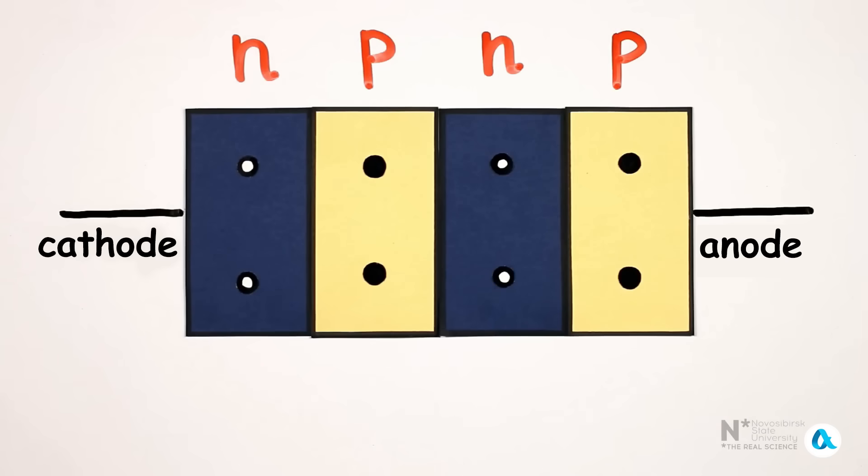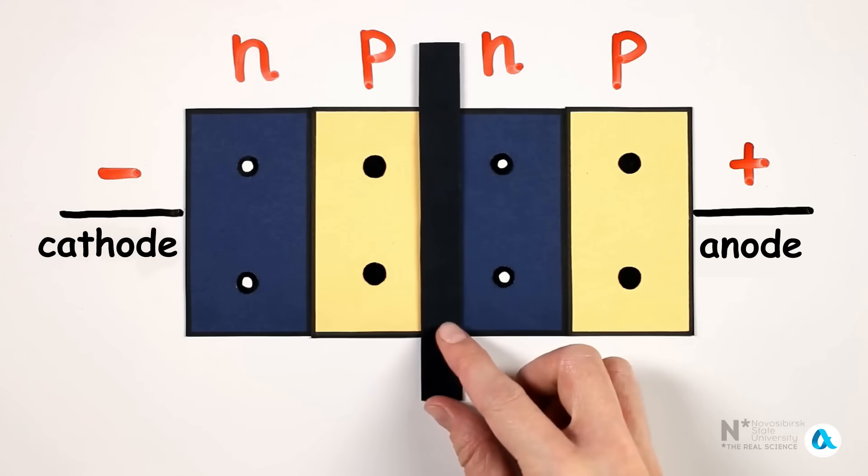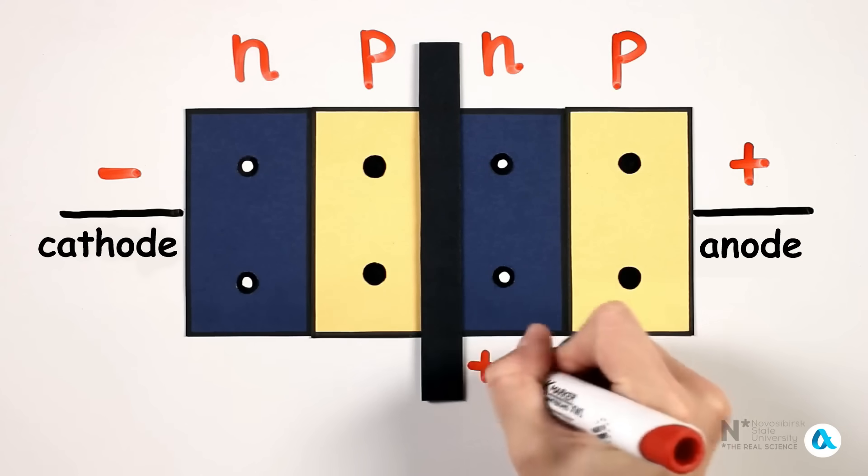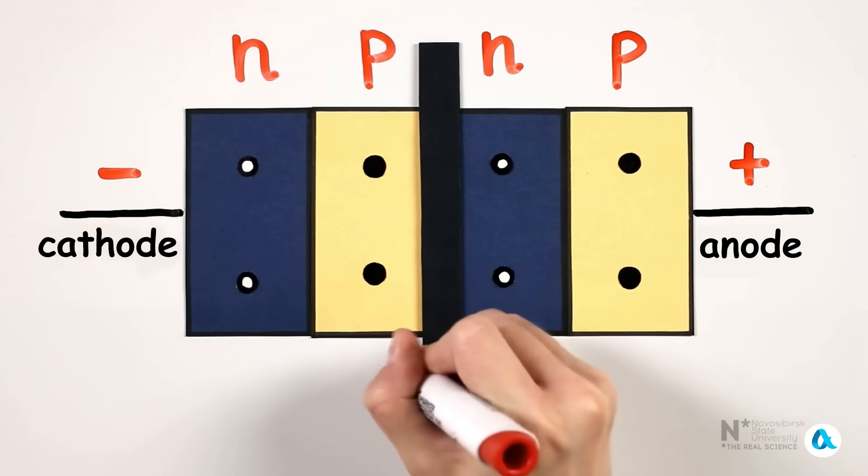When connected directly, we apply the positive to the outer region with hole conductivity, and the negative to the outer region with electron conductivity. In this case, the first and third junctions are open, but the middle junction is closed. Therefore, all the voltage applied to the thyristor falls precisely on this middle junction.